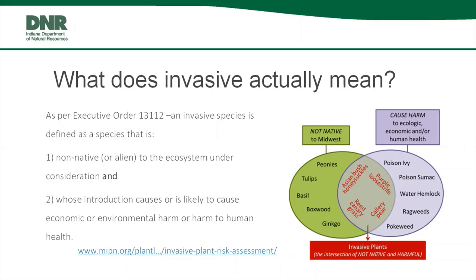This graphic is an example using plants. There are plants that are not native to Indiana, like tulips and boxwoods, but don't cause harm to people, pets, or the environment. There are also plants that are native to Indiana, like poison ivy, that can cause harm when humans come into contact with it. That point in the middle is where the term invasive lives. Exotic does not mean harmful and invasive — to be invasive, both conditions must be met: it should cause harm and be non-native.